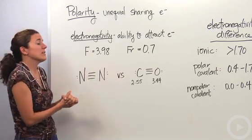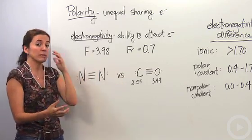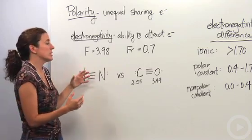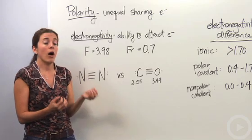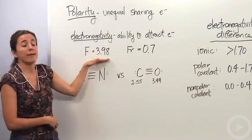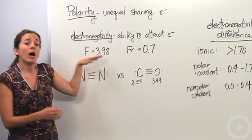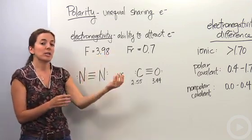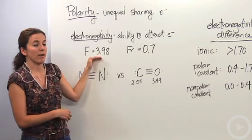So electronegativity is what's playing a major part in this. It's the ability to attract electrons. And we know the trend of electronegativity is that fluorine is the most electronegative atom on the periodic table. It has an electronegativity value of 3.98. Now this is actually all in comparison. These aren't actual values. That's why there's no unit. These are actually in comparison with fluorine, the most electronegative atom.